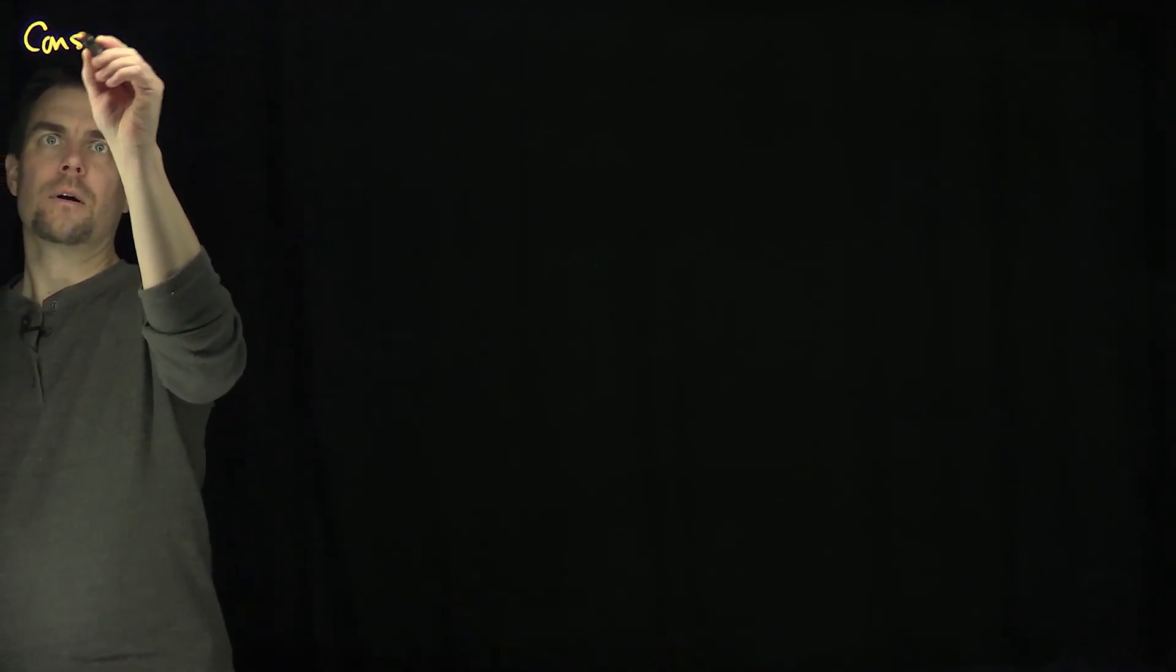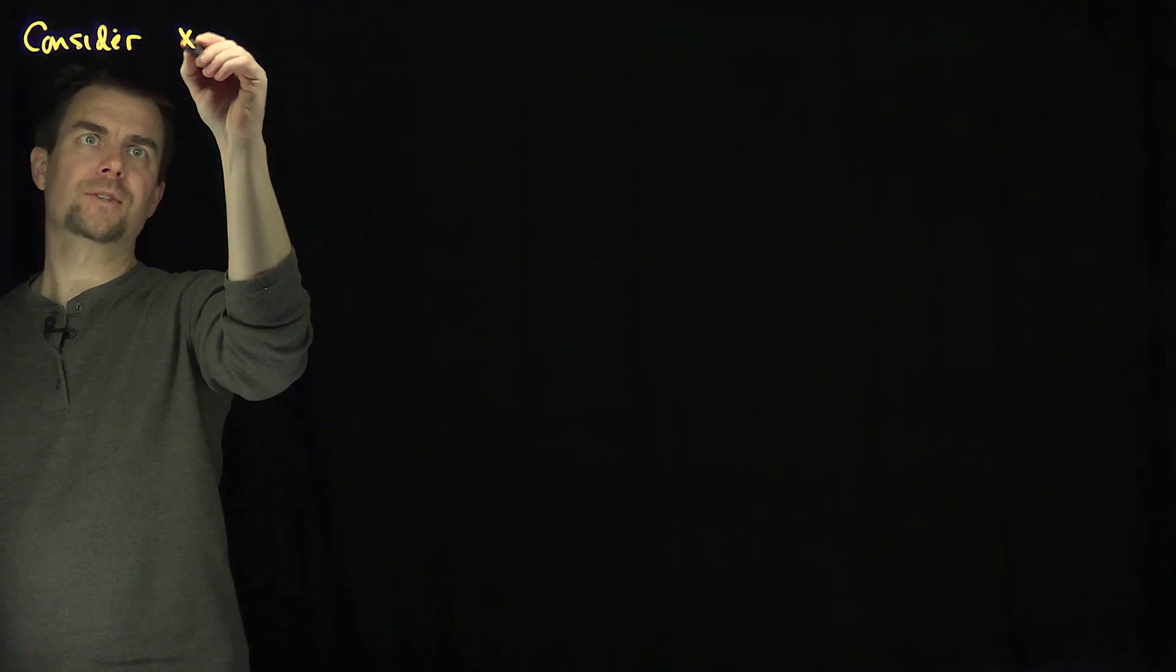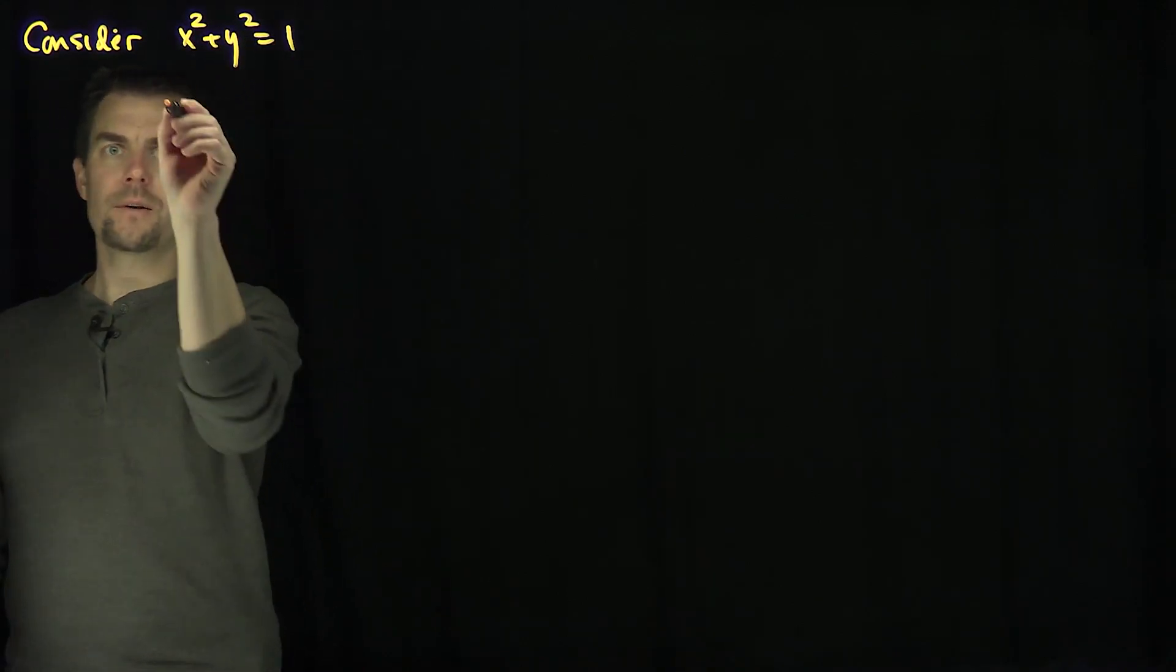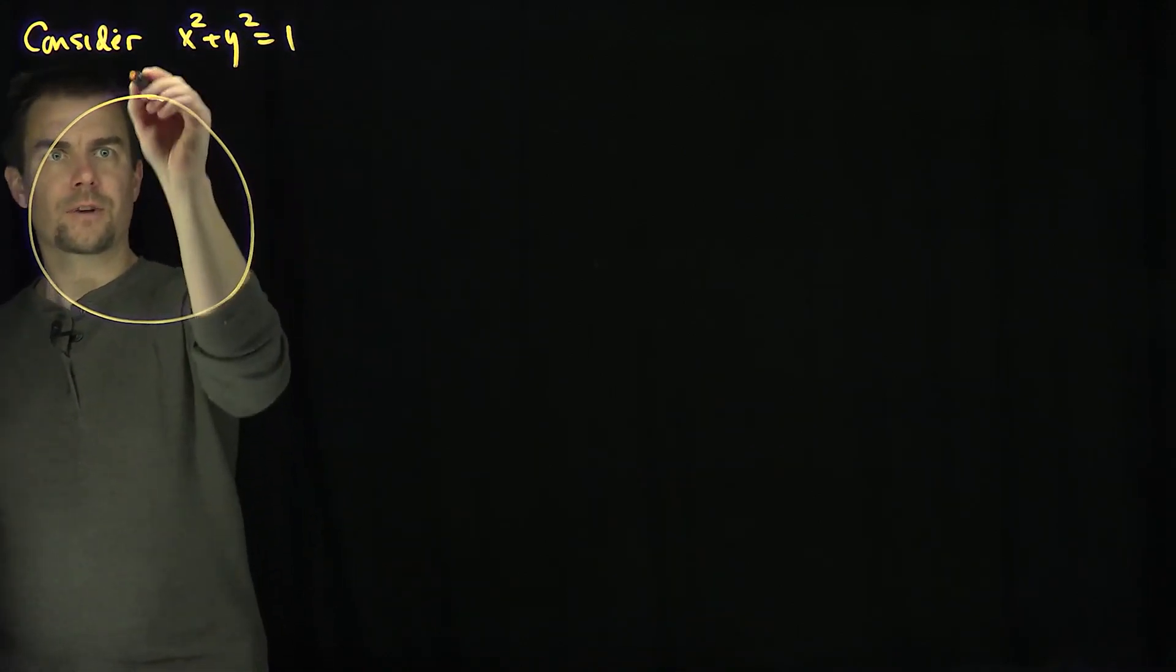So we're going to study the unit circle. Consider x squared plus y squared is equal to 1. That's our unit circle.